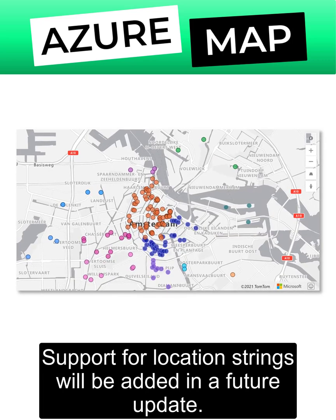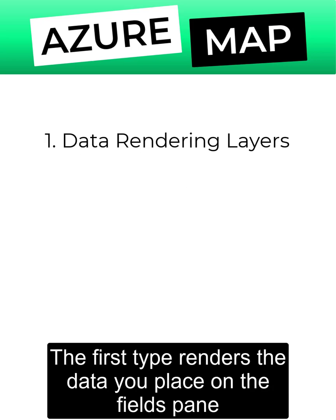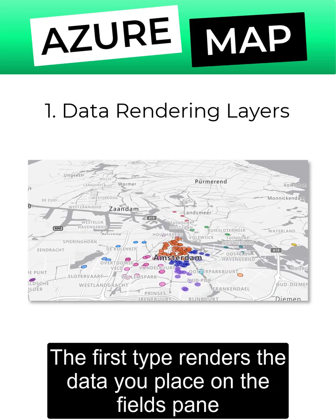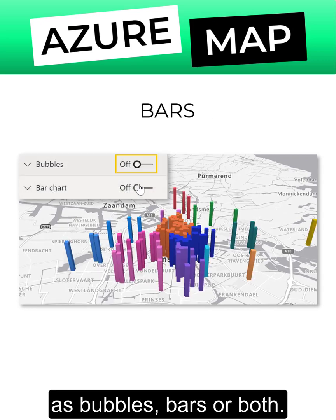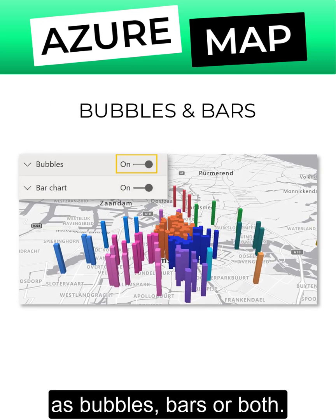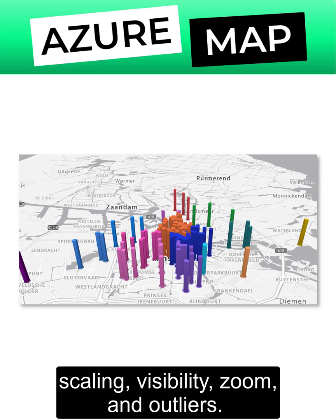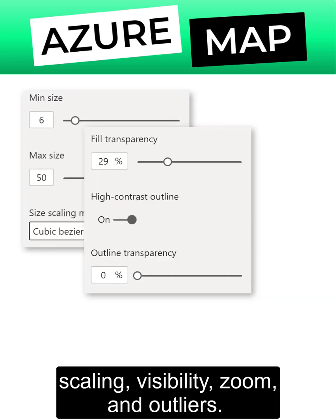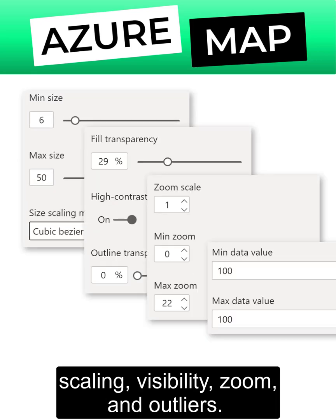Support for location strings will be added in a future update. Now you can add two types of layers. The first type renders the data you place on the fields pane as bubbles, bars, or both. You have many formatting options related to scaling, visibility, zoom, and outliers.